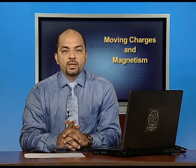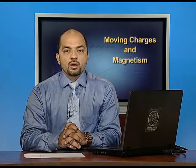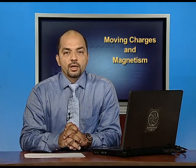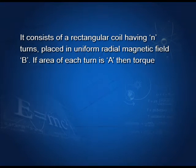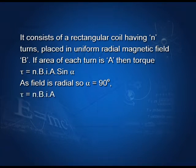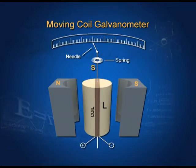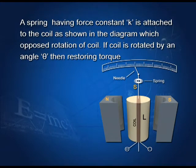In its construction, it consists of a rectangular coil having N turns placed in a uniform radial magnetic field B. The coil is wound on a soft iron core. If the area of each turn is A, then the torque τ equals NBIA sin α. As the field is radial, alpha equals 90 degrees, so the maximum torque τ equals NBIA. Due to this torque, the coil rotates. A spring with force constant K is connected to and opposes the rotation of the coil.